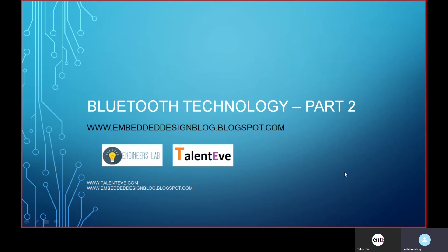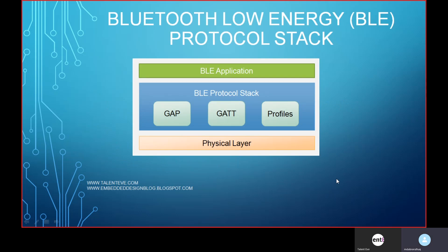Today we'll be discussing Bluetooth Low Energy protocol. For Bluetooth Low Energy, there are three layers: the Physical Layer, the BLE Protocol Stack Layer, and the BLE Application. The physical layer contains the PCB, the BLE IC, the chip antenna or PCB antenna, balun, and all hardware peripherals. The BLE protocol stack consists of three components: GAP, GATT, and Profiles. On top of the Bluetooth protocol stack is the application, which developers use for connecting, disconnecting, and exchanging data.